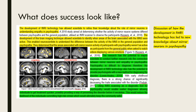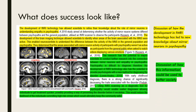Rather than just summarising the findings of the study, the student is discussing the role fMRI played in the acquisition of this new knowledge and what this new knowledge was. They then go on to discuss how this information could be used to better society in terms of further research, diagnosis of psychopathy, and the impact of early diagnosis on individuals.